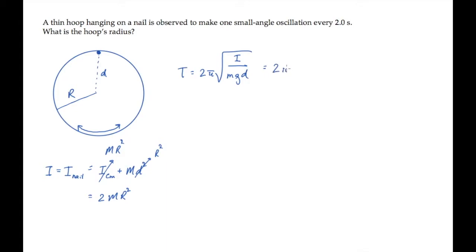Substituting this into the expression above and simplifying, we can solve for the hoop's radius r. It equals g times the period squared divided by 8π squared.